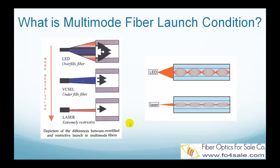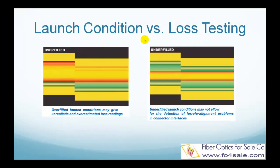So why do launch conditions matter? What is the impact on multi-mode fiber loss testing? These two pictures show what happens when two fiber connectors are misaligned. The red beams represent the modes in the fiber, the green parts represent the fibers, and the yellow parts represent two separate connectors that are mated to each other. In the overfilled condition, the light beam occupies the whole fiber core. Since there is a lateral misalignment, part of the higher order modes are blocked and lost. So this measurement shows a large loss,